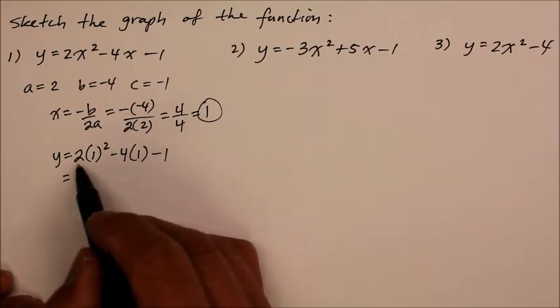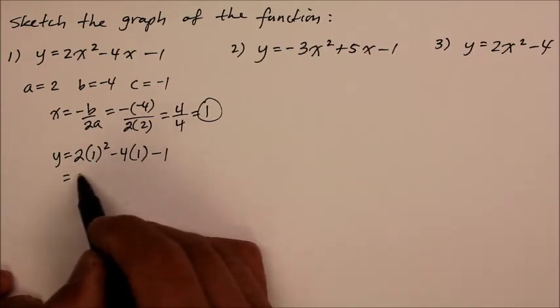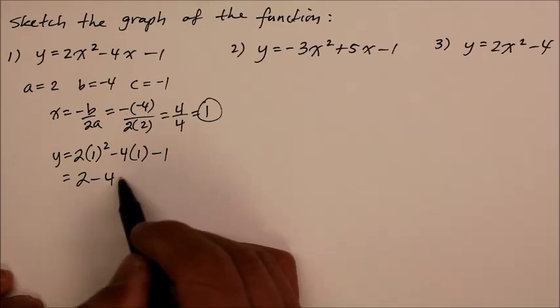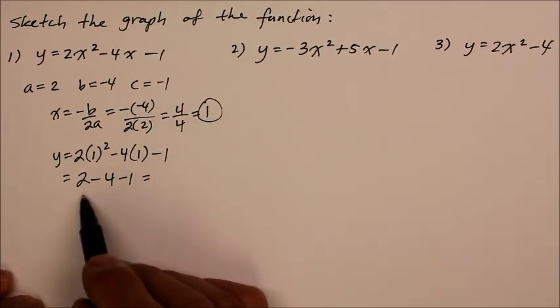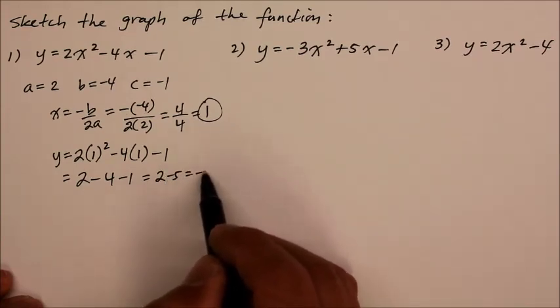When we evaluate, we get 2 times 1 squared which is simply 2, minus 4 times 1 is 4, minus 1. Evaluate across, that's 2 minus 5, which is negative 3.